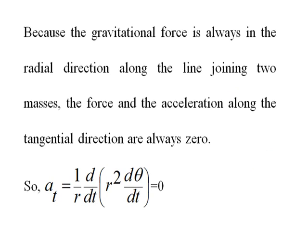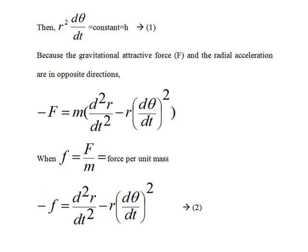Because the gravitational force between the sun and the planet is along the radial direction, as given in slide number 4, the tangential acceleration is equal to zero. From this equation we can see that r squared times dθ/dt is a constant.